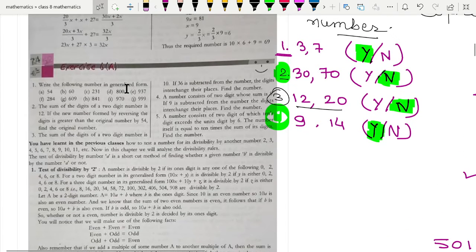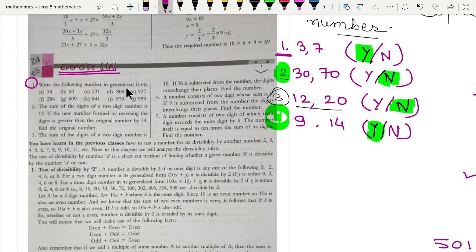So, my dear student, this is the very first exercise of playing with numbers, exercise 6a, and the very first question we are talking about is how can you write the number in the generalized form. Here it is 54. You can write 54 is equal to 50 plus 4, because the tens place digit is 5, so its place value will be 50, and 4 into 1 is 4.